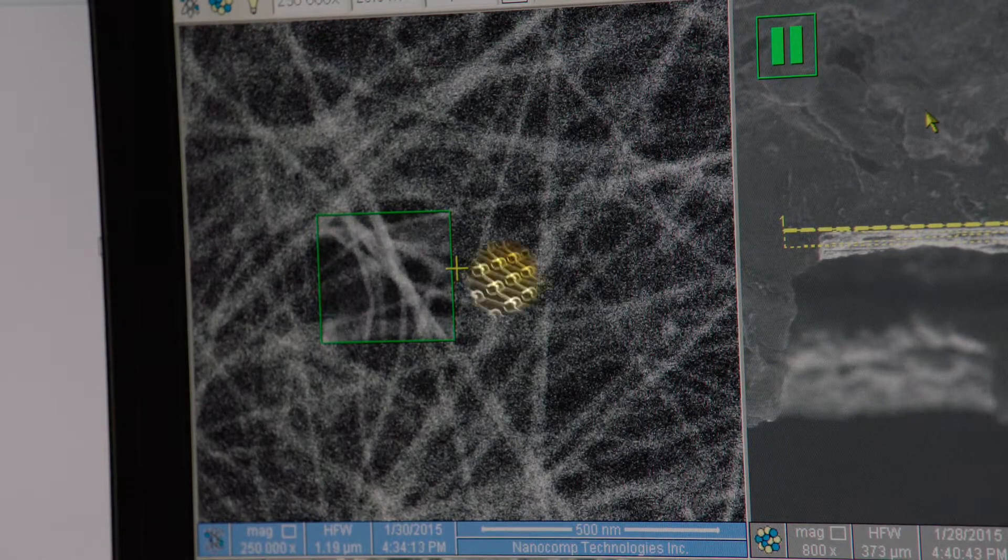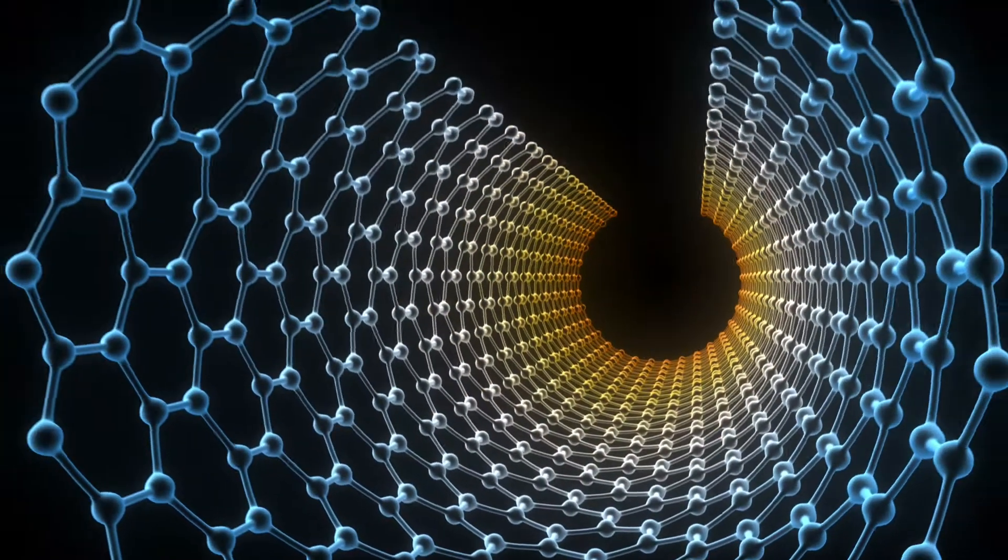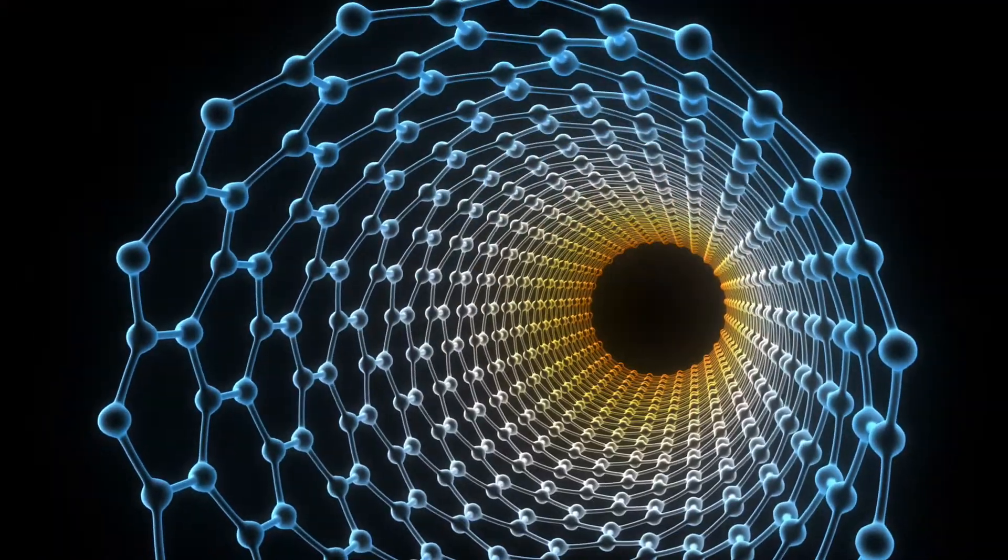Despite their tiny size, nanomaterials can be excellent conductors of electricity. And when you forge them together, they can make sheets that are stronger than a speeding bullet.